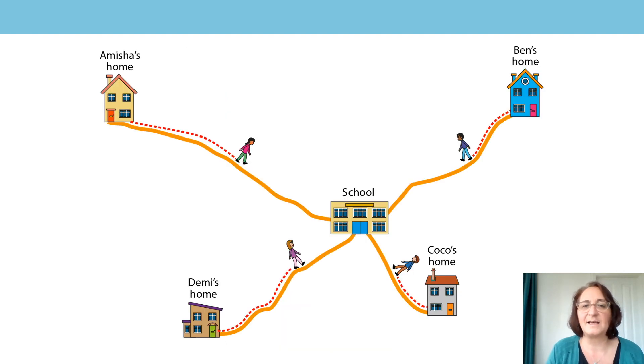Let's have a look at this next slide and the positions of the four children on their journeys to school. We've got Amisha and Demi who we've met before and this time we've got Ben and Coco as well. Which two children have walked about the same percentage of their journey? Amisha has walked about half or 50% of her journey. Ben has completed a bit less than this. Demi has completed more than half of her journey and Coco appears to have completed half or 50% of hers. So both Amisha and Coco have completed about 50% of their journey.